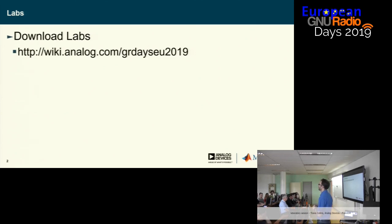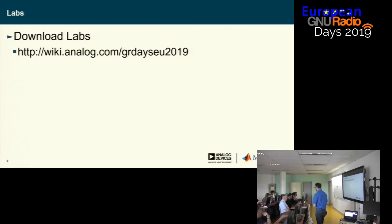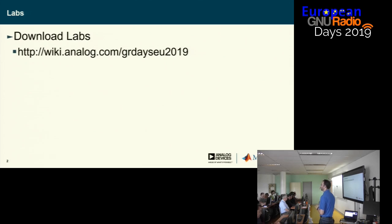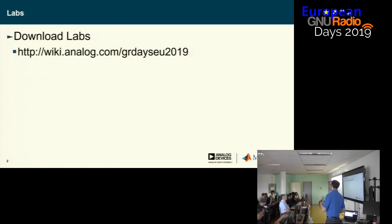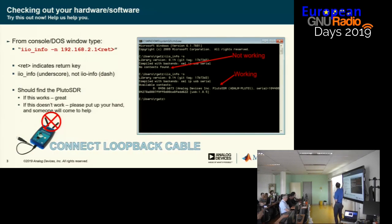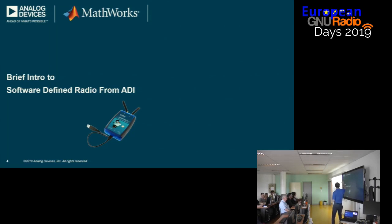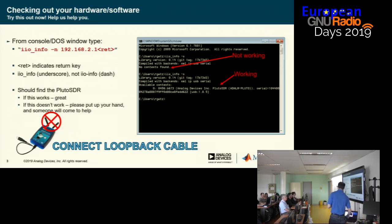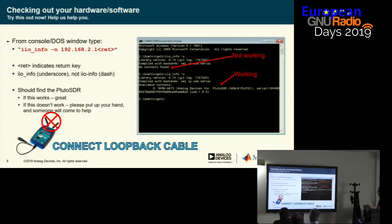Was everyone able to get the labs? For those who couldn't, the Windows machines will be fine for the first lab. We can just build the flow graph that's part of the zip file, or build it by hand — it's only a few blocks. Once you download the labs, open a terminal and type 'iio_info -n' followed by the IP address, and you should get a response from the radio. If you can't find it, please raise your hand and we'll check your VirtualBox.